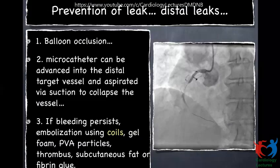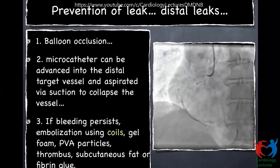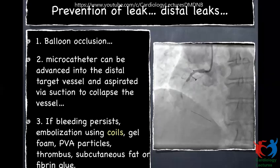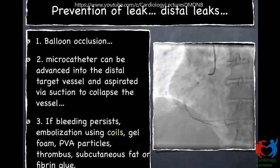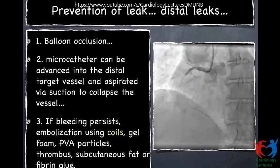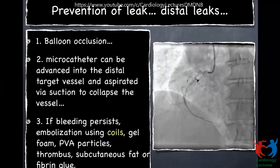How do we prevent distal leaks? You have different options. One, you could occlude a small balloon distally inside the wire-induced perforation area. Second, use a microcatheter advanced into the distal target vessel and do suction so the vessel collapses. If bleeding persists in distal leaks, you can embolize the vessel with coils, gelfoam, or PVA particles. We prefer coils because they offer controlled delivery. With PVA particles and gelfoam, you are not sure how much or what portion of the vessel you will embolize.